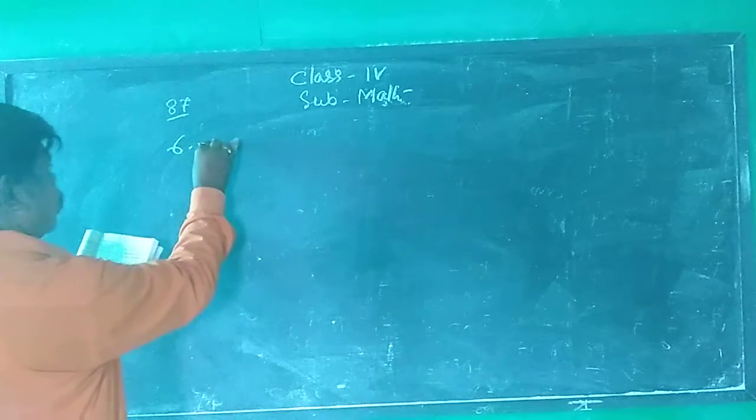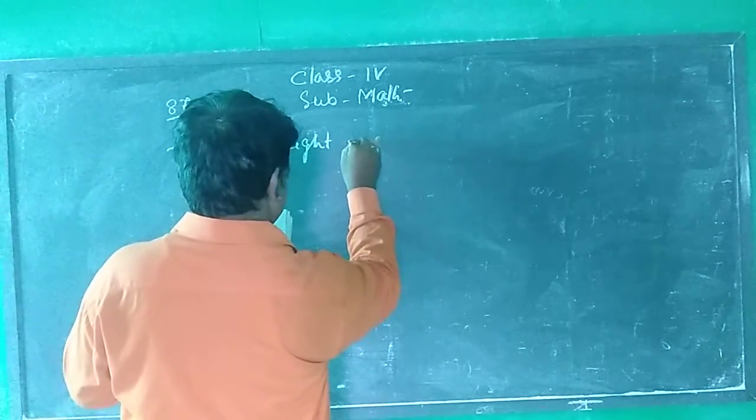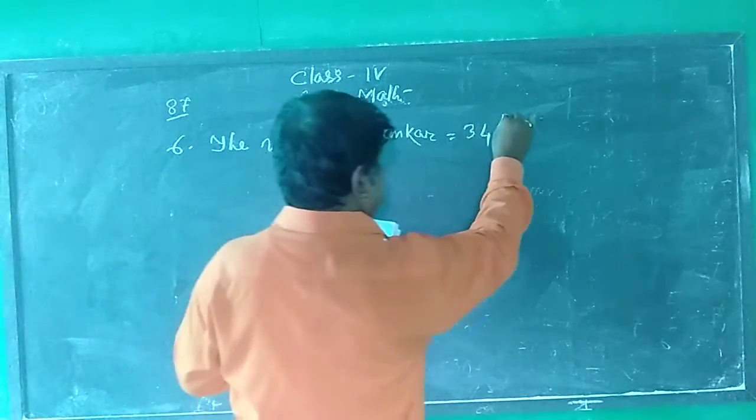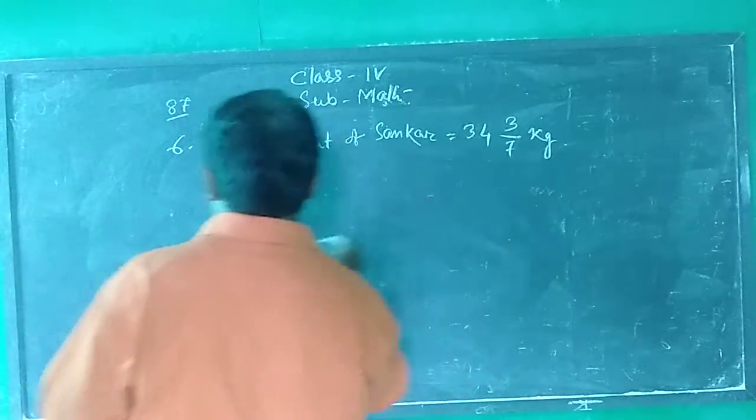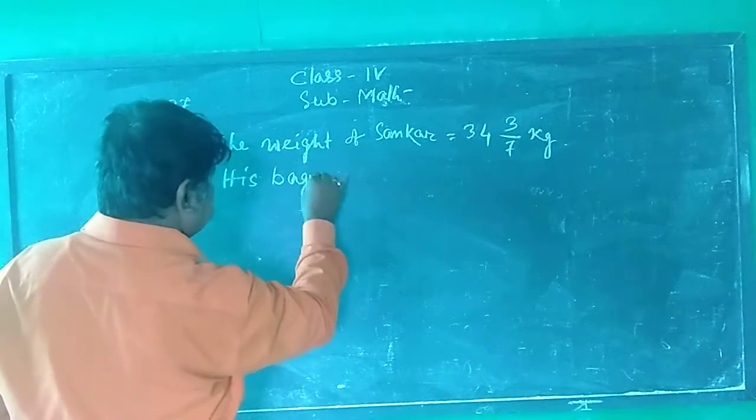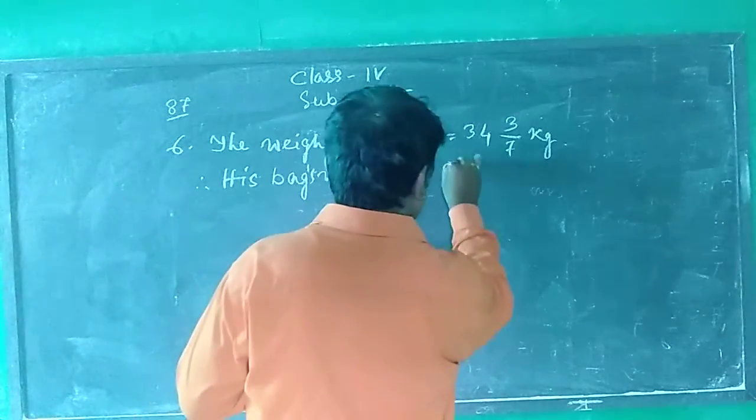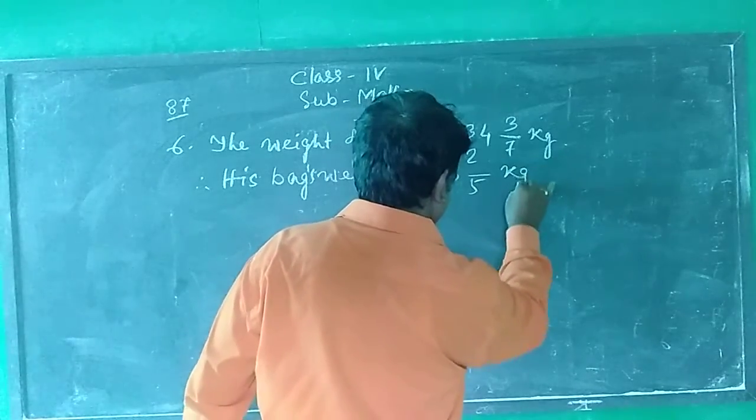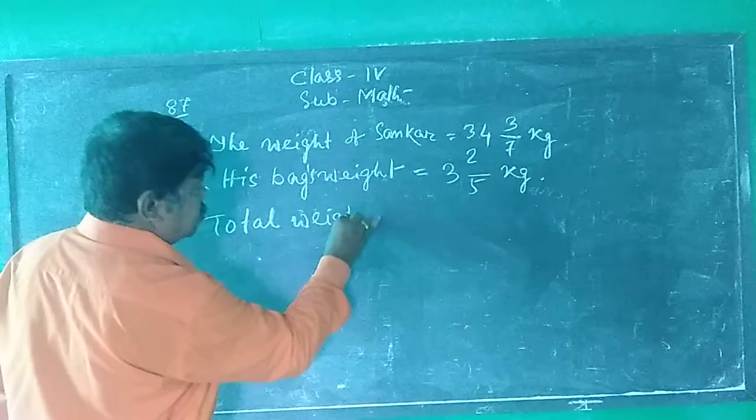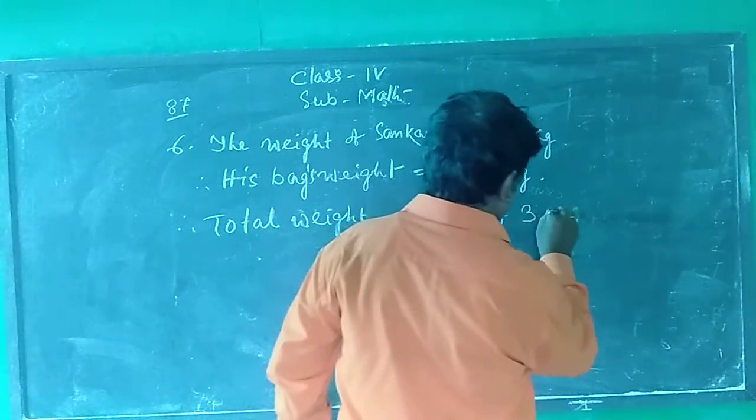Number 6. The weight of Sankar equals to 34 whole 3 by 7 kg. His bag weight equals to 3 whole 2 by 5 kg. Total weight equals to 34 whole 3 by 7 plus 3 whole 2 by 5 kg.